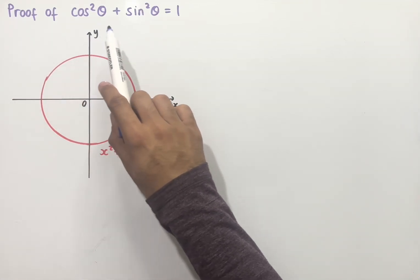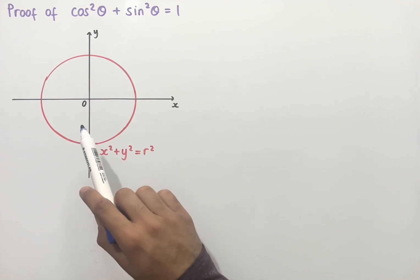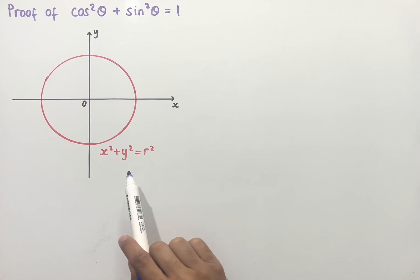Let's look at the proof of cos squared theta plus sin squared theta equals 1. Now we have a circle with the center at the origin, and the equation of this circle is given by x squared plus y squared equals r squared, where r is the radius.